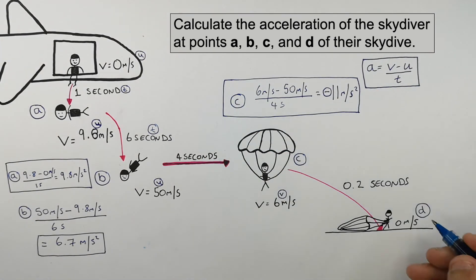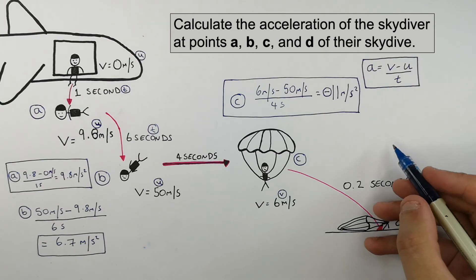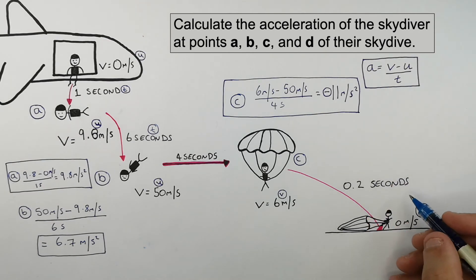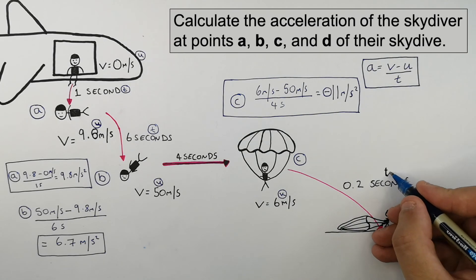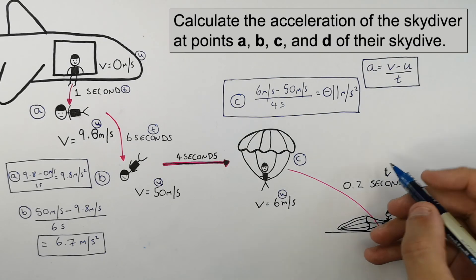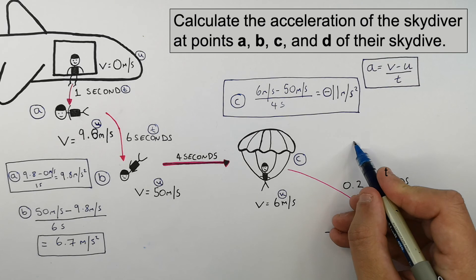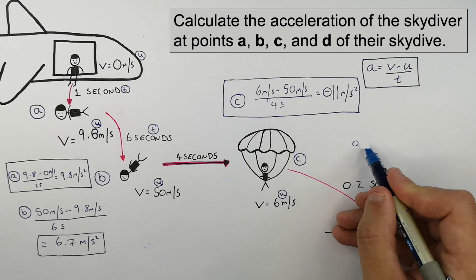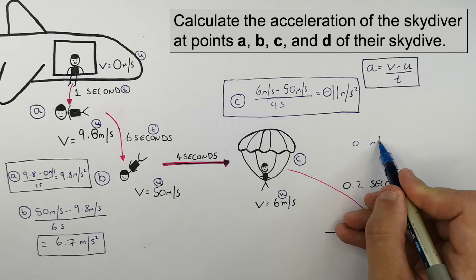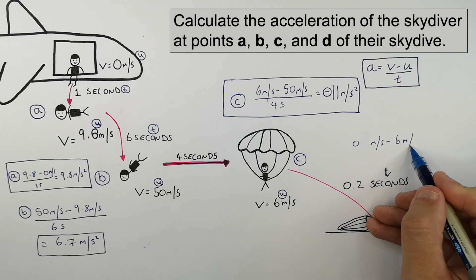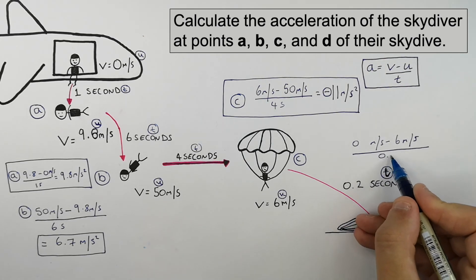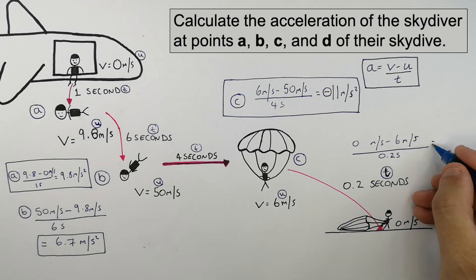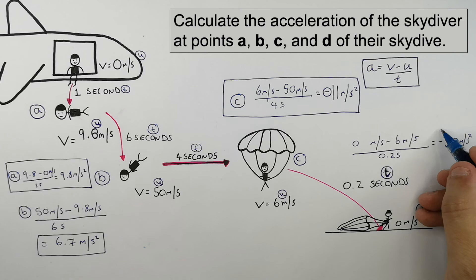In the final example at landing, their initial velocity is 6 meters per second and their final velocity is zero meters per second. Recall A equals V minus U over T: 0 minus 6, divided by 0.2 seconds, giving a deceleration of minus 30 meters per second squared.